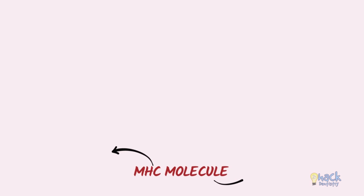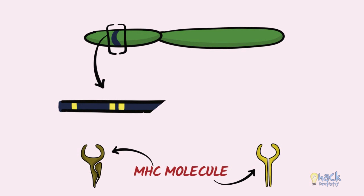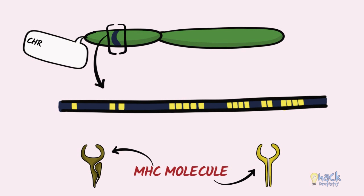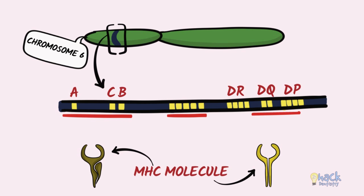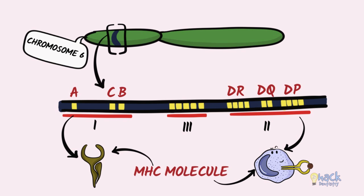MHC molecules are proteins encoded by MHC genes located in the short arm of chromosome 6. There are three types of MHC molecules — MHC 1, 2, and 3 — out of which 1 and 2 are important for antigen recognition by T cells. Their function is to display peptides on the cell surface of an antigen-presenting cell or a nucleated cell for the purpose of recognition by T cells.